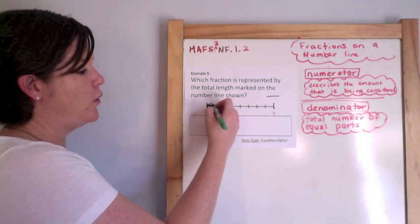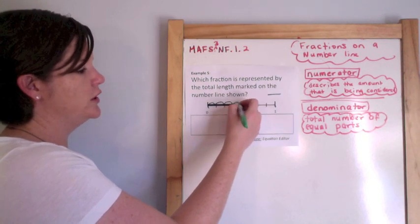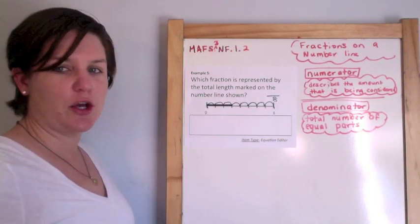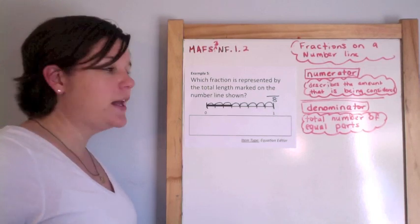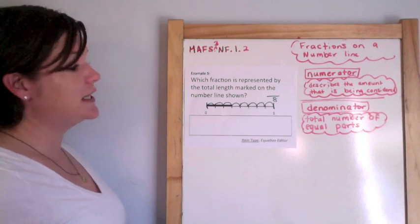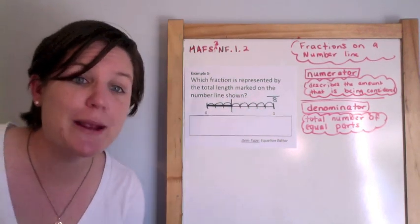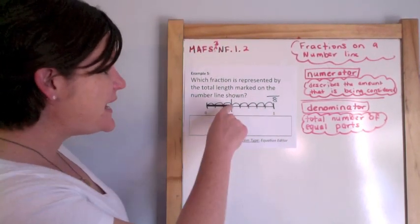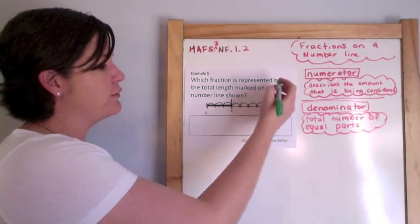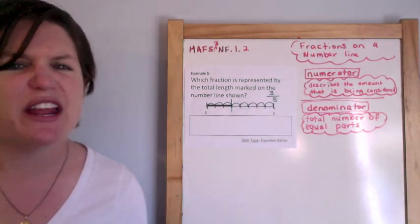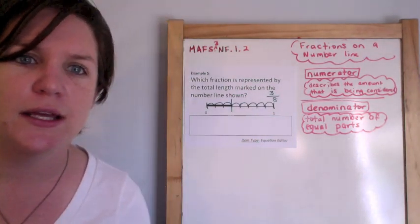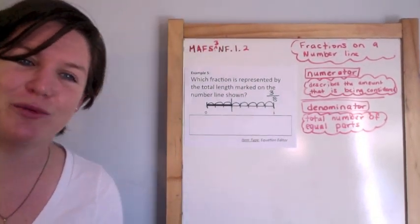First, like I said before, you find your denominator, your total number of equal parts from one whole to the next. So hop with me. 1, 2, 3, 4, 5, 6, 7, 8 is my denominator. And my numerator is describing the amount that is being considered. They're saying, consider me ending right there. Where am I? Well, you are 1, 2, 3 hops away. So 3 eighths. If I put my answer there, it is wrong because this is an equation editor. It needs to go into the box.